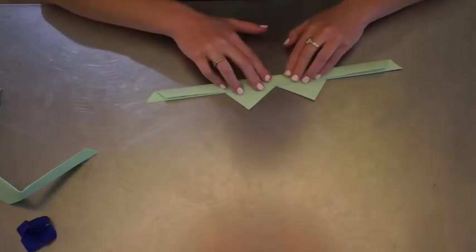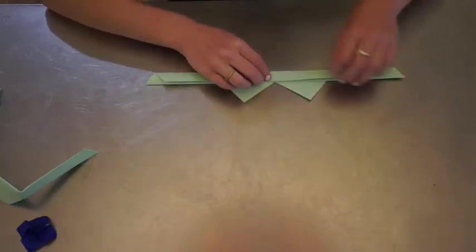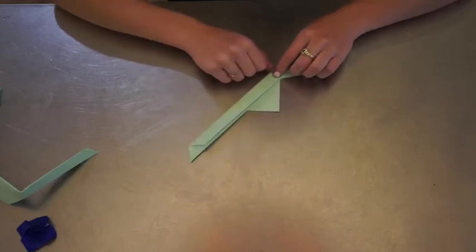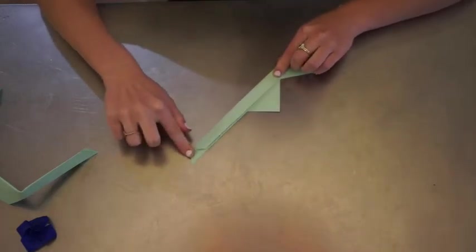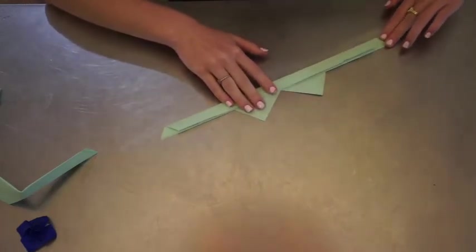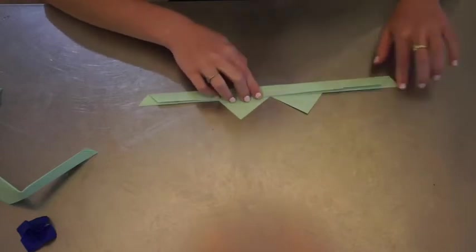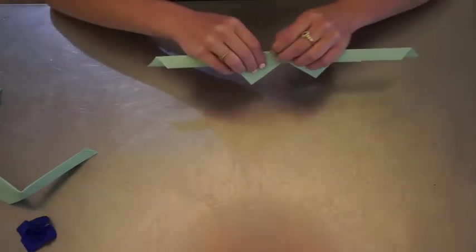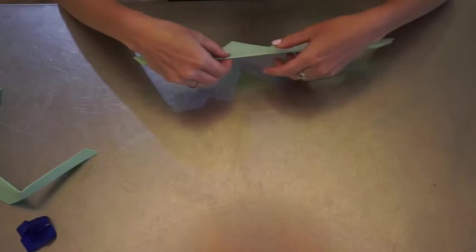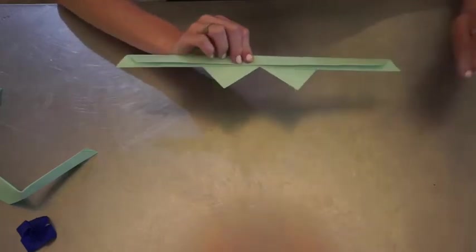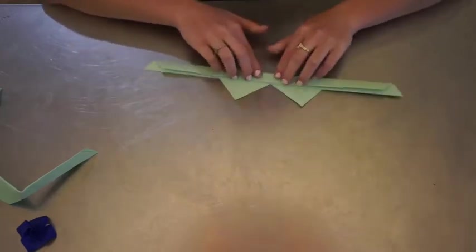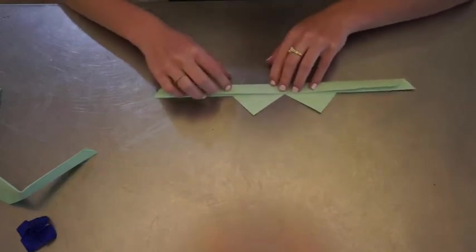Maybe use something like a piece of silverware or a credit card or something that's stiff that you could use as a creaser. I forgot to grab something, otherwise I would show you. All you need to do is get a nice sharp crease there. You can kind of see the sunglasses starting to take shape a little bit.